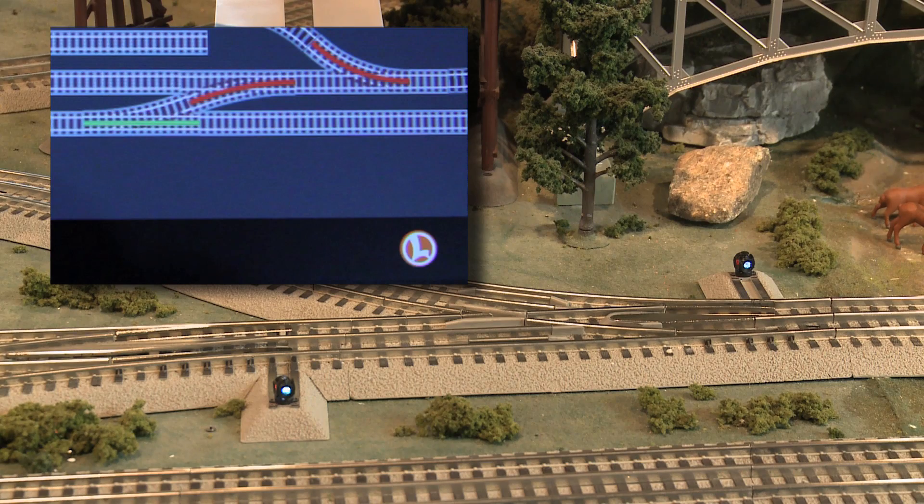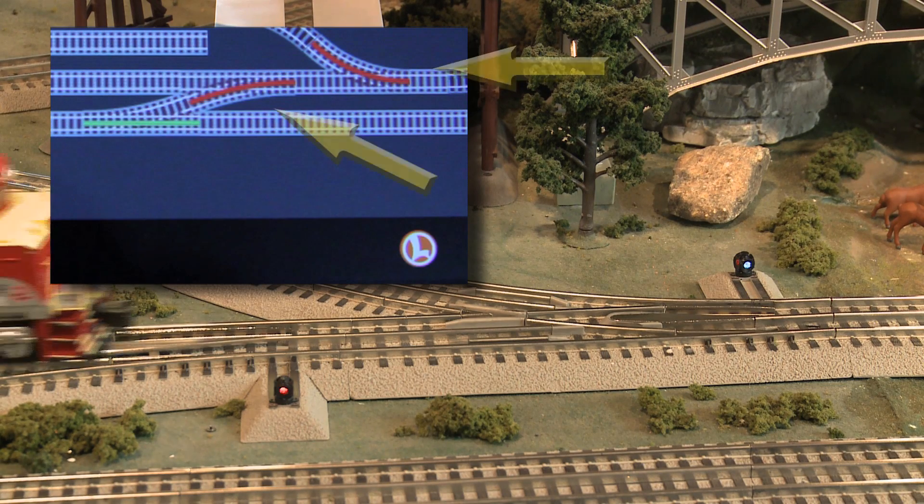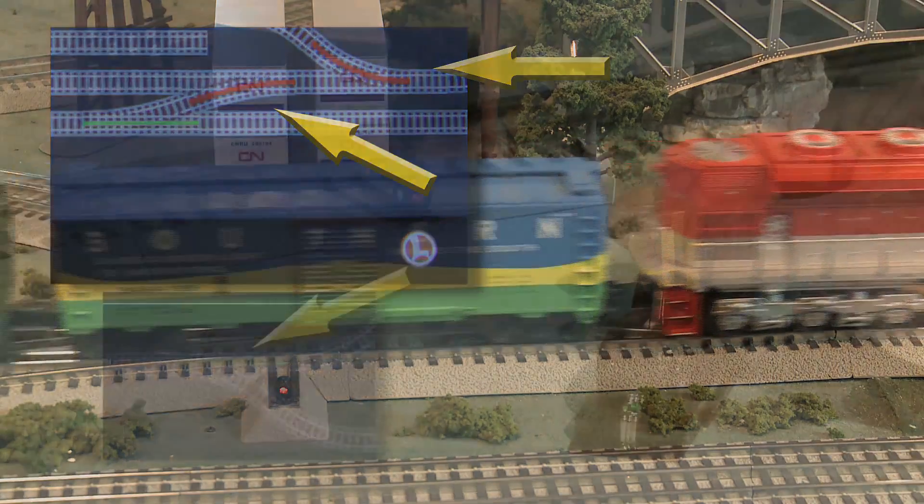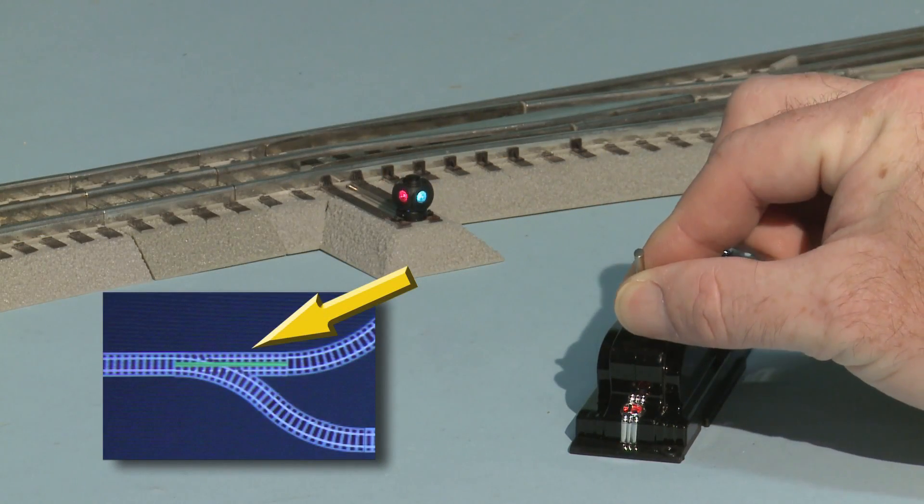For instance, if a train activates a switch through the non-derailing feature, or if the remote control throws the switch, the Wi-Fi app will still show the switch as being in the previous position.